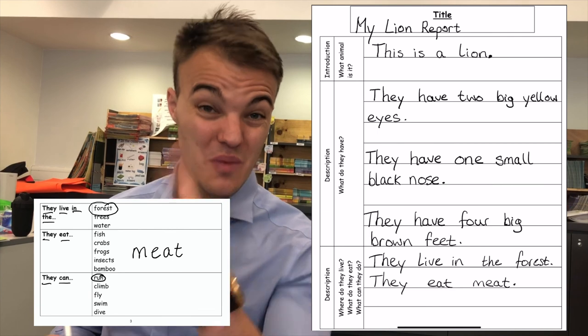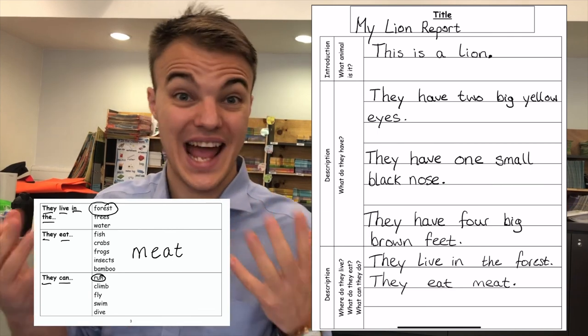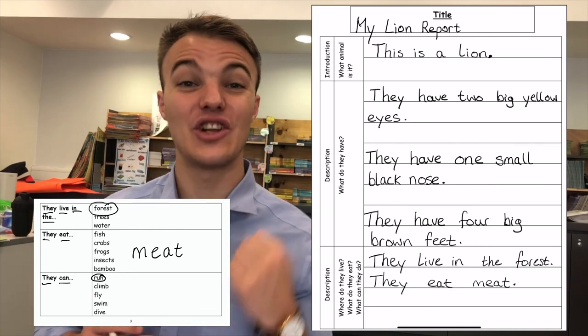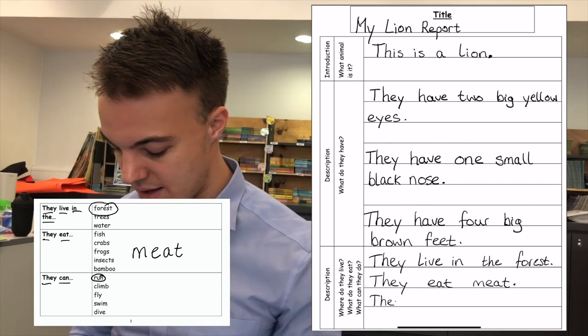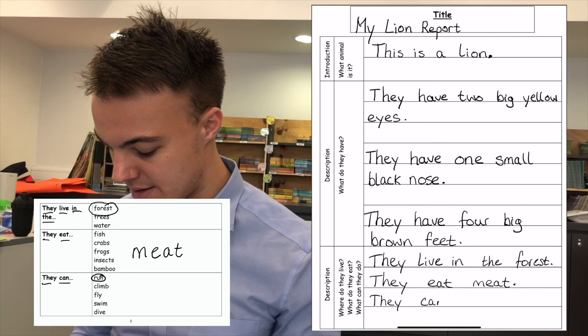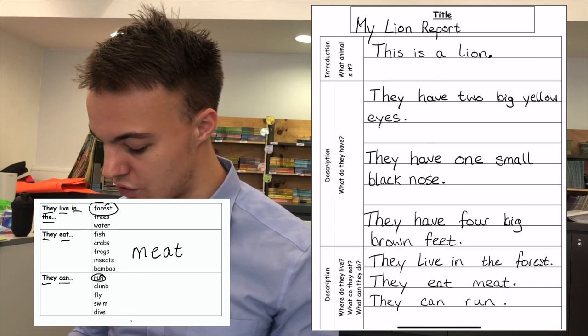Wow. Just one more sentence. What can they do? They can run. They can run. Big letter T. They can run. Full stop.